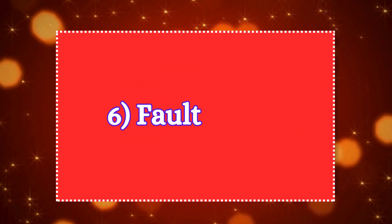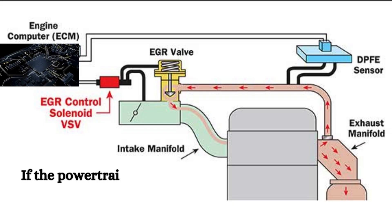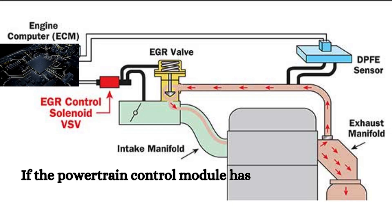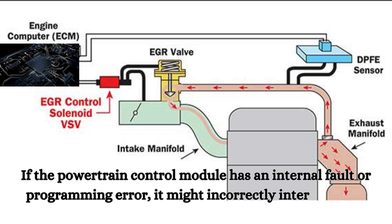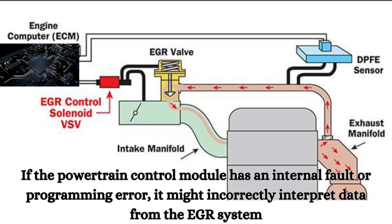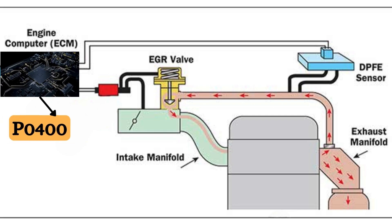Six: faulty PCM. If the powertrain control module has an internal fault or programming error, it might incorrectly interpret data from the EGR system. While rare, such a malfunction can lead to the incorrect setting of the P0400 code, even if the EGR system components are functioning correctly.